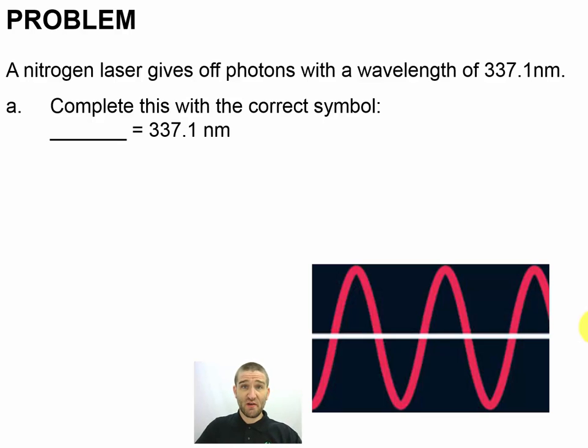This is going to be a problem video where we're going to solve three different pieces all related to wavelength. The setup tells us that a nitrogen laser, one of my favorites, gives off photons with a wavelength of 337.1 nanometers. Notice that's going to be a black light laser, ultraviolet.